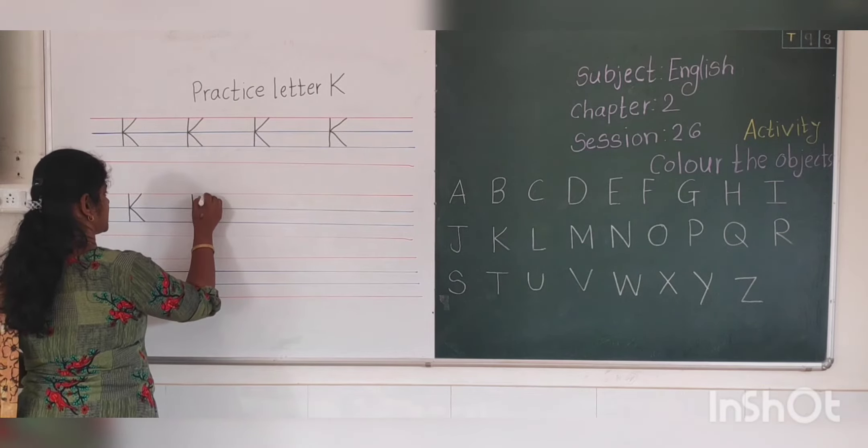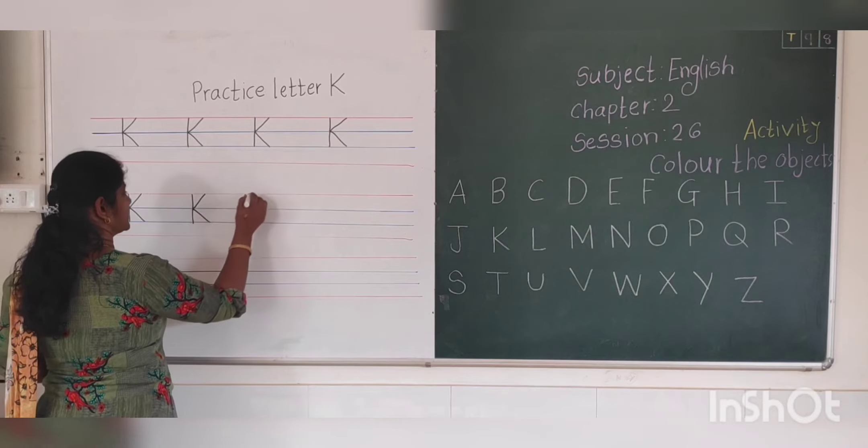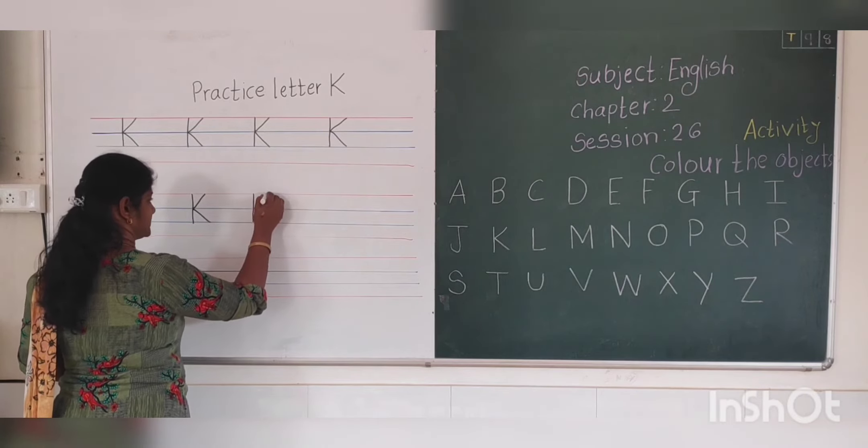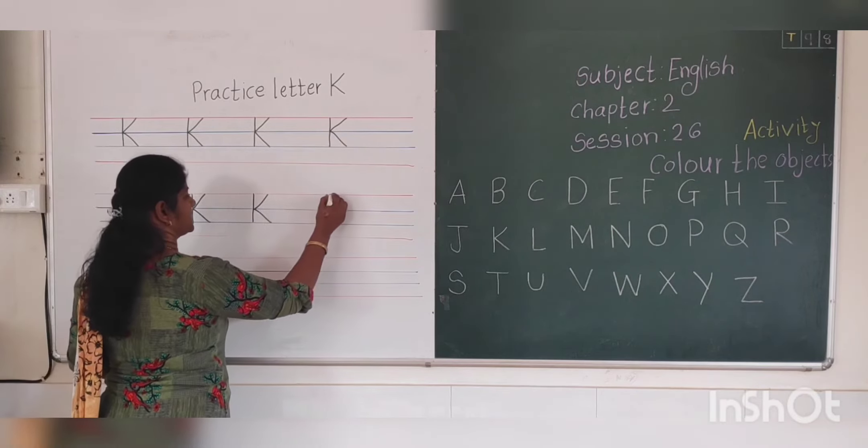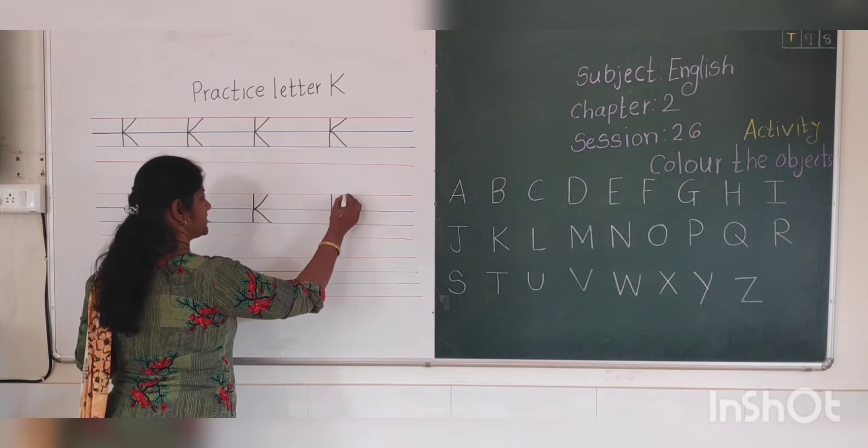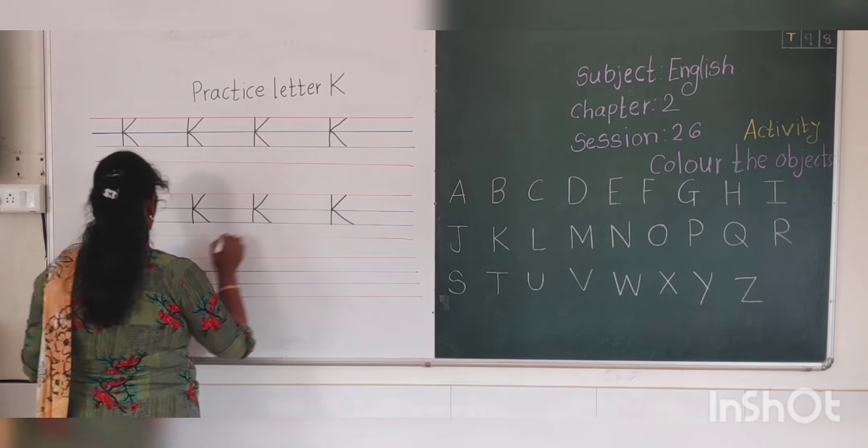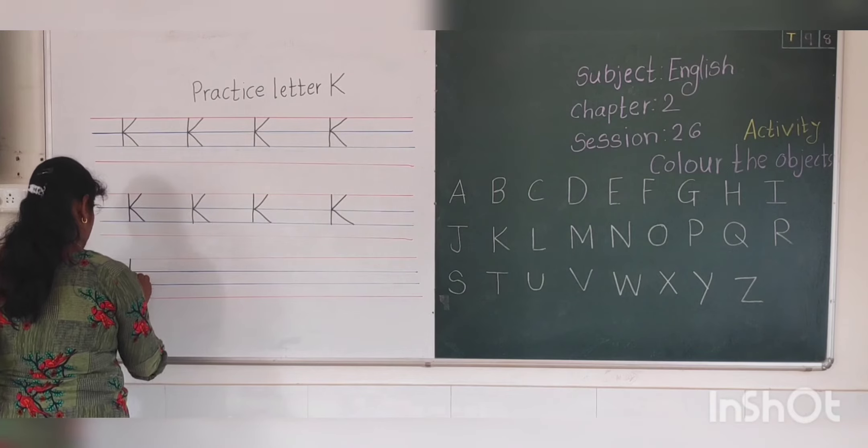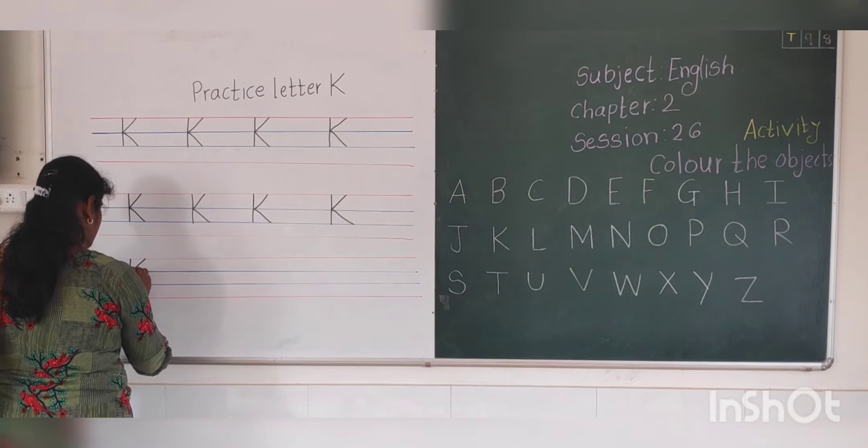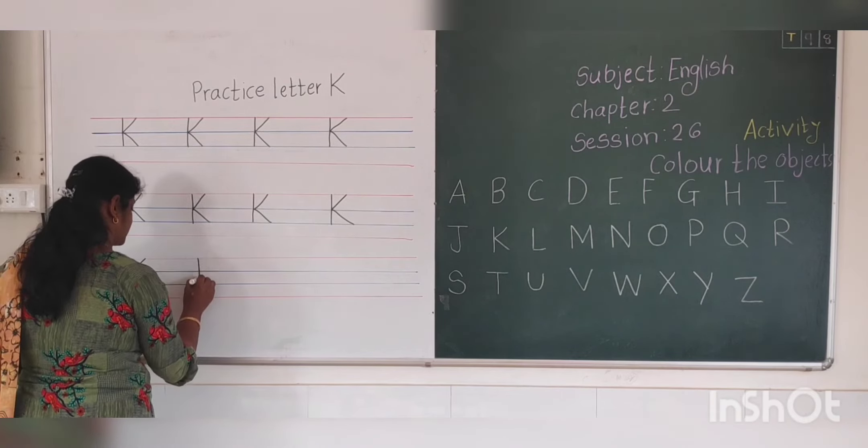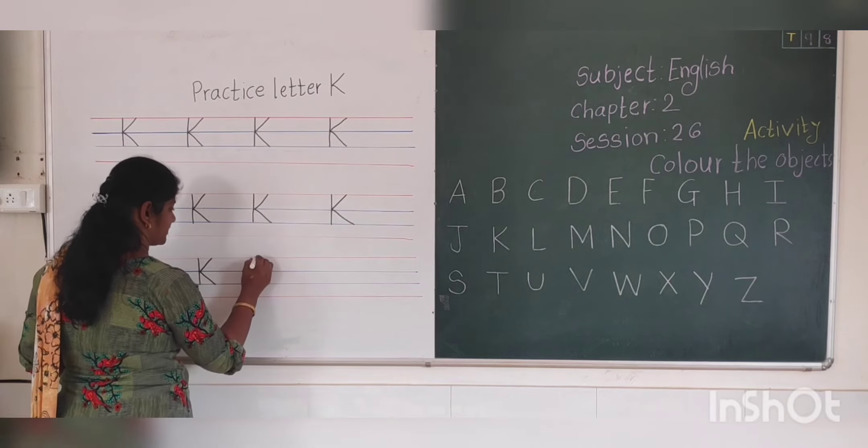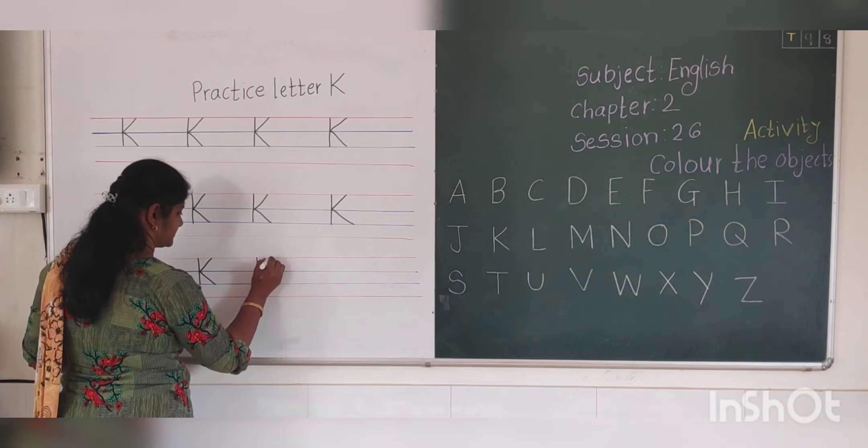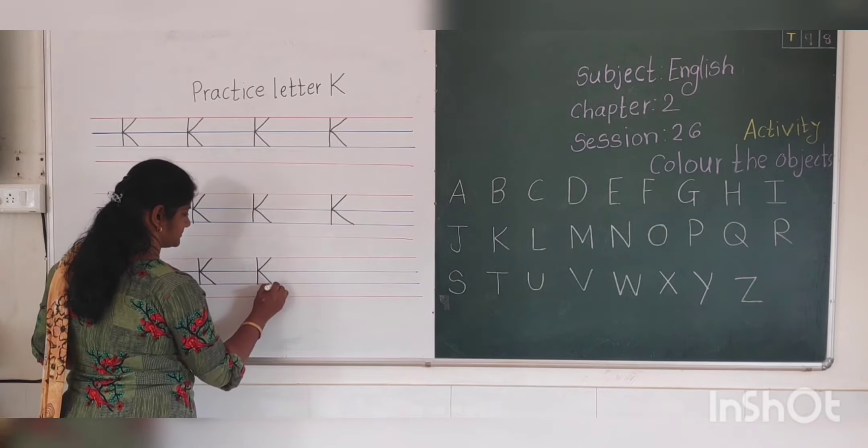This is K, K for king. This is K, K for key. This is K, K for kangaroo. This is K, K for kiwi. This is K.